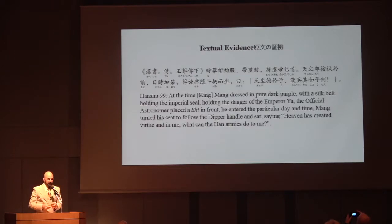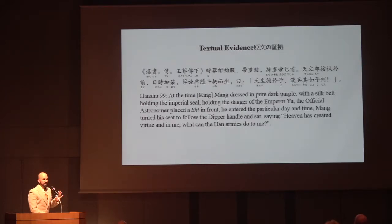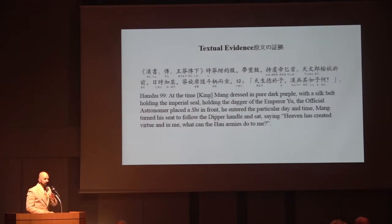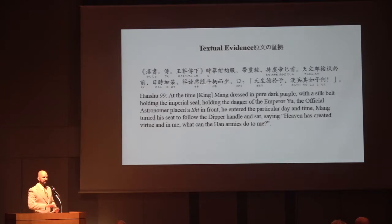The last case study: in the middle of the Han dynasty there was a usurper called Wang Mang, who established a new dynasty. He's being attacked by a rebellion, hidden in the back of the palace. He dressed himself in dark purple with a silk belt, holding the imperial seal and the symbolic dagger of Emperor Da Yu. The official astronomer placed a Shurpan in front of him — he oriented his seat to follow the dipper handle and sat saying: 'Heaven has created virtue in me, what can the Han armies do to me?' He aligned himself to the dipper — the celestial chariot of the emperor. It turns out it didn't work well because he was stabbed by a common soldier.